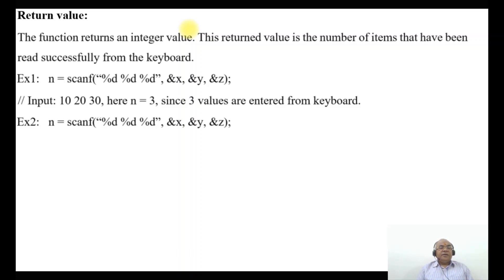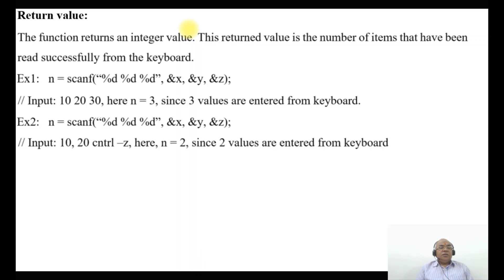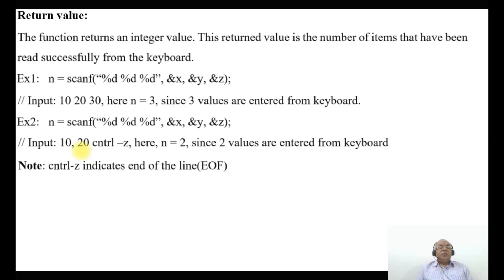If the scanf statement is n = scanf("%d %d %d", &x, &y, &z) and the input is 10, 20, and then Ctrl+Z, n equals 2, since only two values are entered from the keyboard. Control+Z indicates the end of the input.